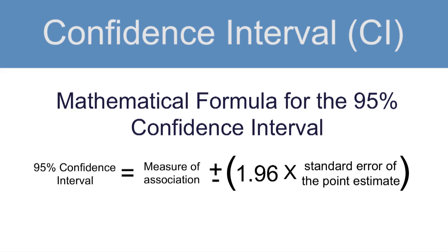Here is the mathematical formula for a 95% confidence interval. The measure of association could be a risk ratio, a prevalence odds ratio, a rate ratio, etc. You take that estimate and then subtract 1.96 times the standard error of the point estimate to get the lower 95% confidence bound. To get the upper 95% confidence bound, you add 1.96 times the standard error. Note that 1.96 is specific to the 95% confidence interval. If you wanted to calculate the 99% confidence interval, you would use 2.575, and for a 90% confidence interval, you would use 1.645.